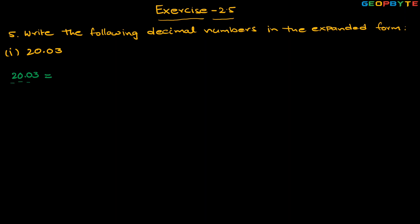This zero is at the tenths place and three is at the hundredths place. Two is at the tens place, so two × 10. Plus zero is at the ones place, so zero × 1. Plus this zero is at the tenths place, so zero × 1/10. Plus three is at the hundredths place, so three × 1/100. This is the expanded form of 20.03.